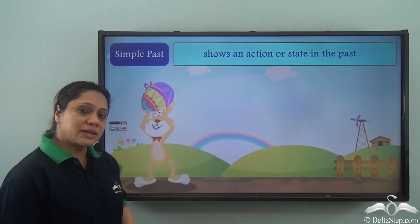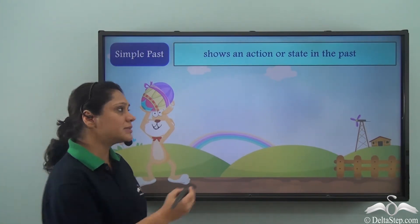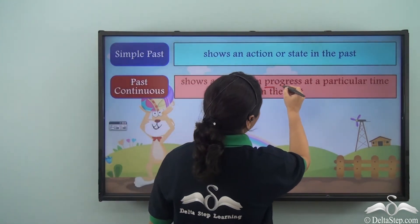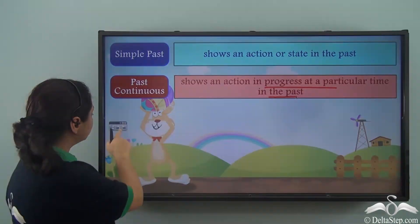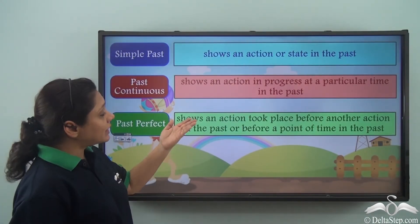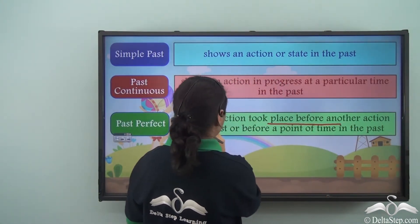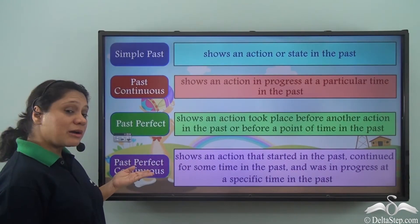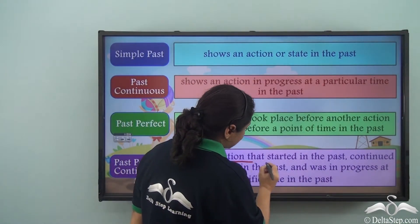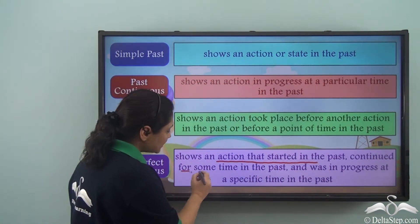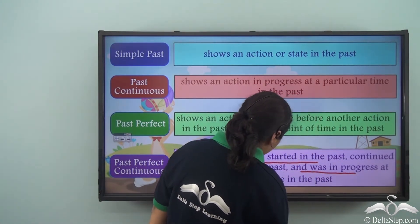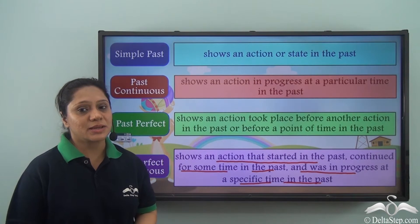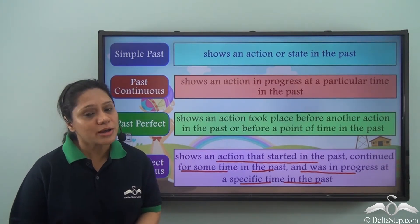The simple past tense shows an action or state in the past. The past continuous tense shows an action in progress at a particular time in the past. The past perfect tense shows that an action took place before another action in the past or before a point of time in the past. The past perfect continuous tense shows an action that started in the past, continued for some time in the past, and was in progress at a specific time in the past. I hope that all the different types of past tense are absolutely clear to you.